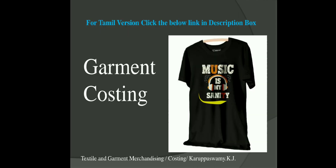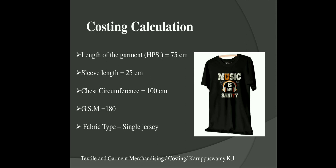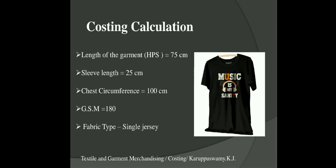Finally you add your profits. Now we are moving to garment costing calculation. Take this basic t-shirt — round neck with chest printing. The measurements are: high point shoulder 75 cm, sleeve length 25 cm, chest circumference 100 cm, GSM is 180, and fabric type is single jersey.